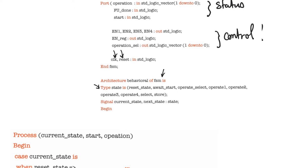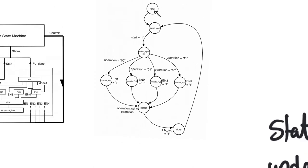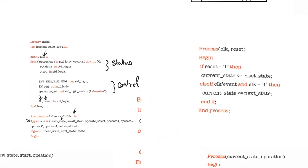In the architecture we define a new user-defined data type called 'state' — you can call it whatever you want. It's a user-defined enumeration. We have seen user-defined array types in memories and shift registers; here we see the other kind: enumerations. Enumerations are really helpful in finite state machines. The state data type is simply a list of strings — the names of the states: reset state, await start, operate select, operate one, operate two, and so on. These are exactly the names of the states in the state transition diagram.